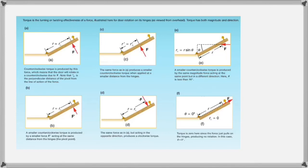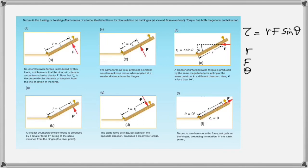The second condition for equilibrium involves avoiding accelerated rotation. An object could be rotating, but as long as it rotates at constant angular velocity, it is in equilibrium. To understand this, we define torque. Torque is defined as R times F times sine theta — there are three quantities involved: force, distance from the axis of rotation, and the angle theta.